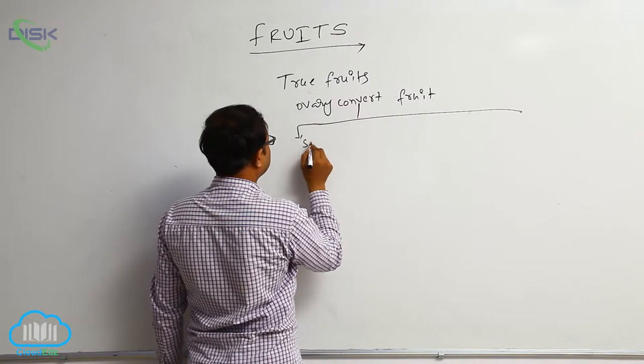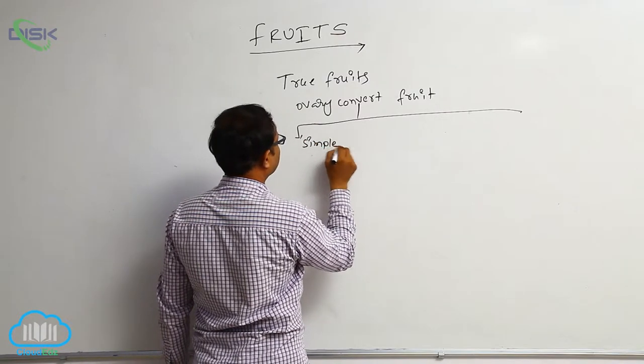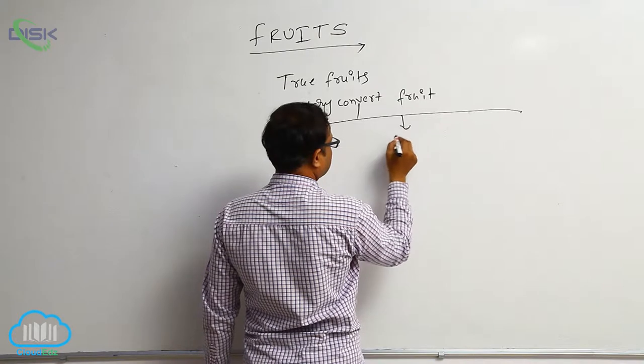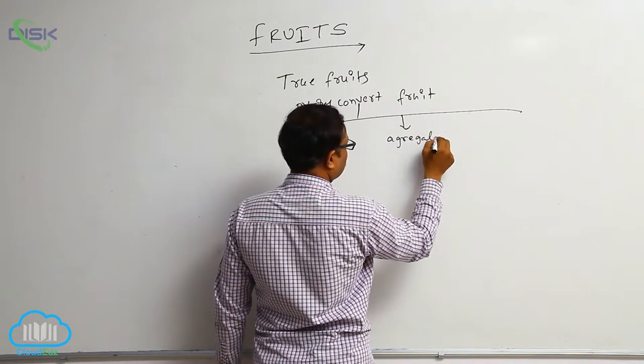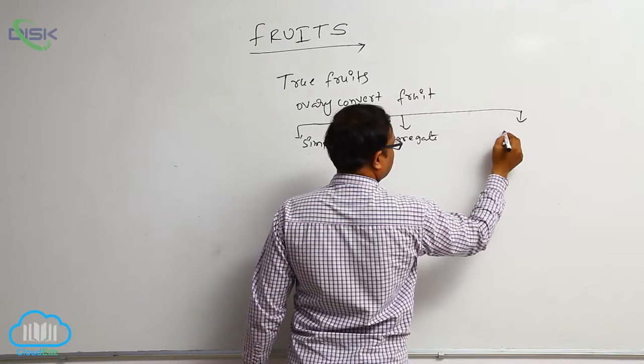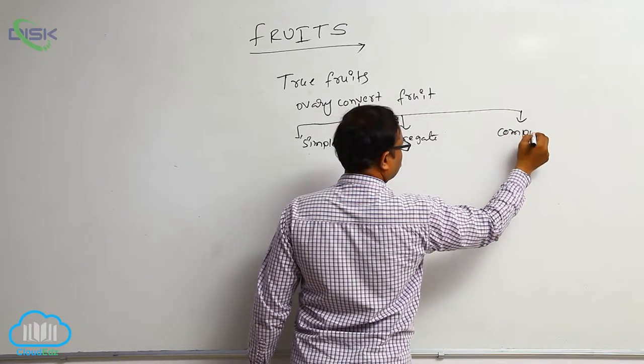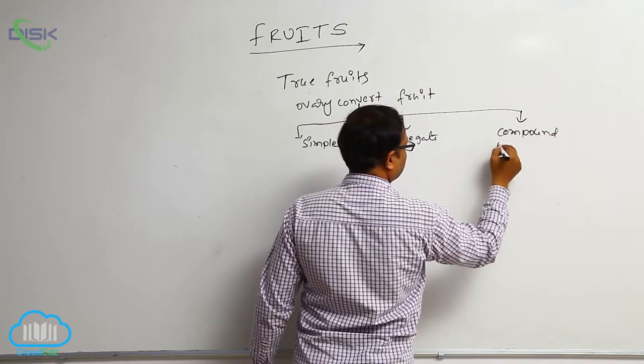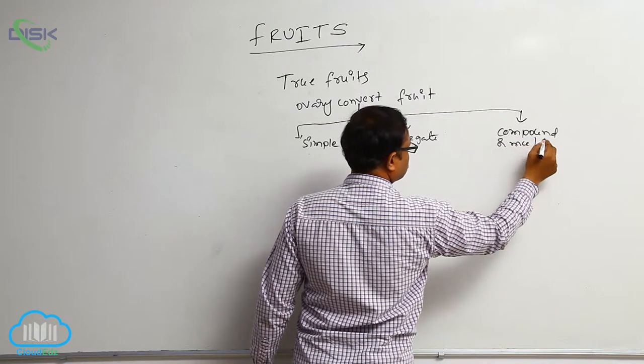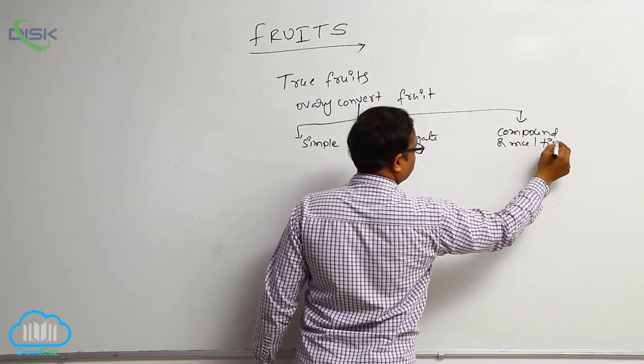First one is the simple, second one is aggregate, third one is compound or multiple fruits, multiple fruits.